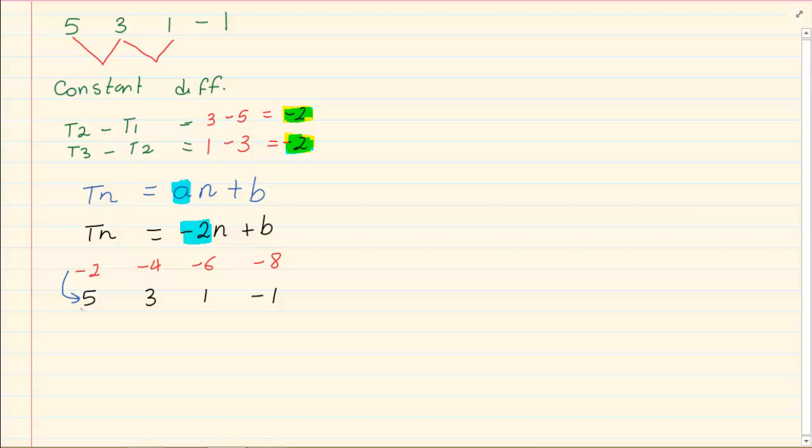What we're trying to get is what is the difference from this number to this number? So what is the difference from minus 2 to 5? How did I get from minus 2 to 5? How did I get from minus 4 to 3? How am I getting from minus 6 to 1? What we're actually doing is we are adding 7. If I say minus 2 plus 7, I will get 5. If I say minus 4 plus 7, I will get 3. If I say minus 6 plus 7, I will get 1. So what we're actually doing now is we are adding 7.